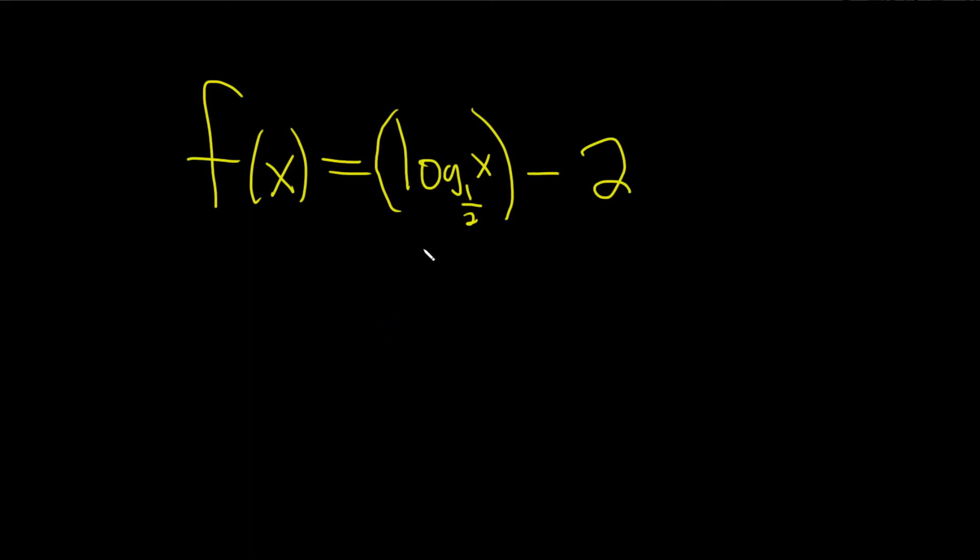Hi everyone, in this problem we're going to graph the function log base 1 half of x minus 2. So basically we're going to first graph log base 1 half of x, and then because we're subtracting 2 from the entire function, we're just going to shift it down by 2.